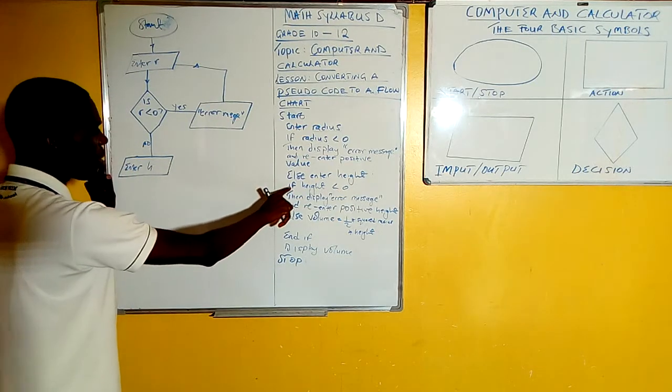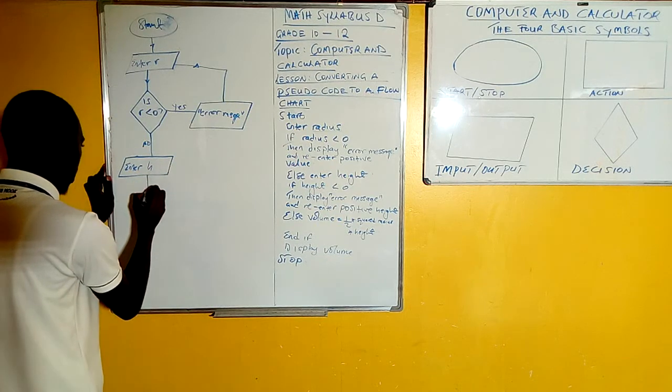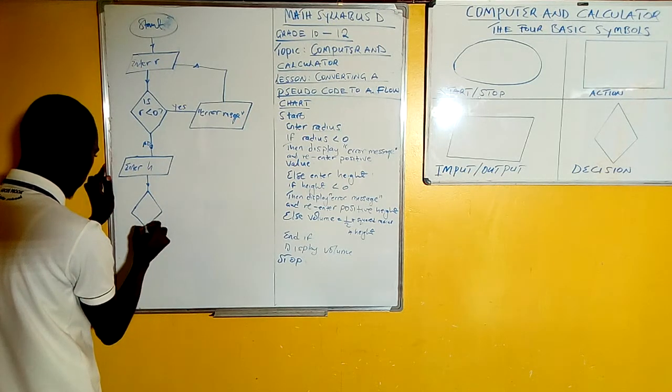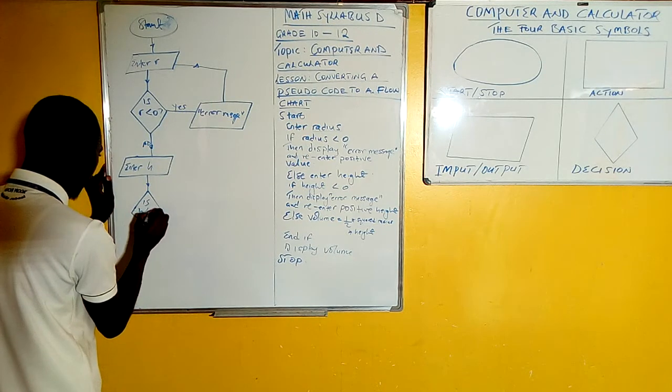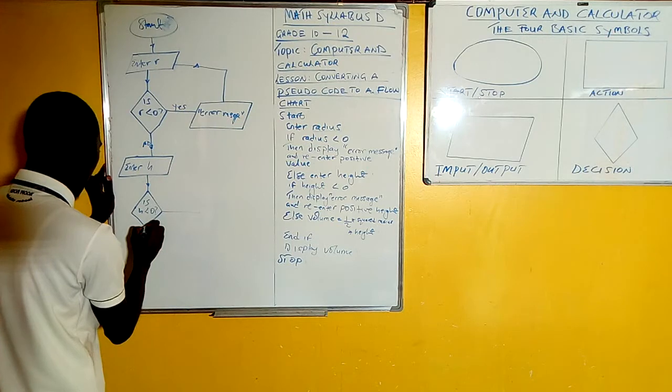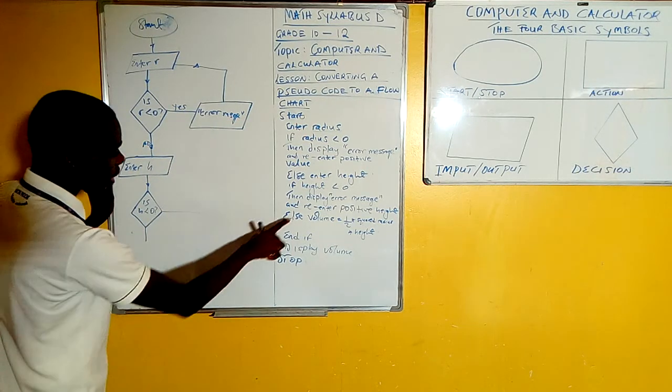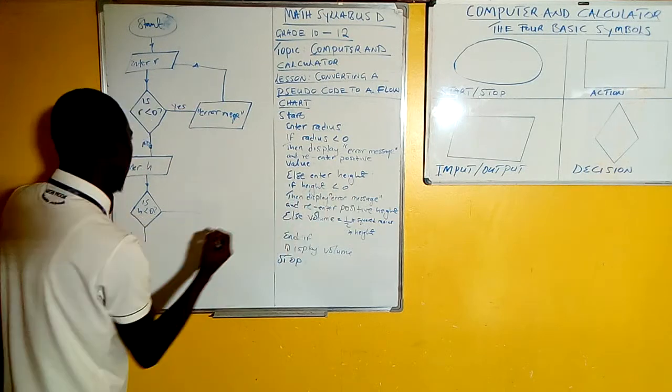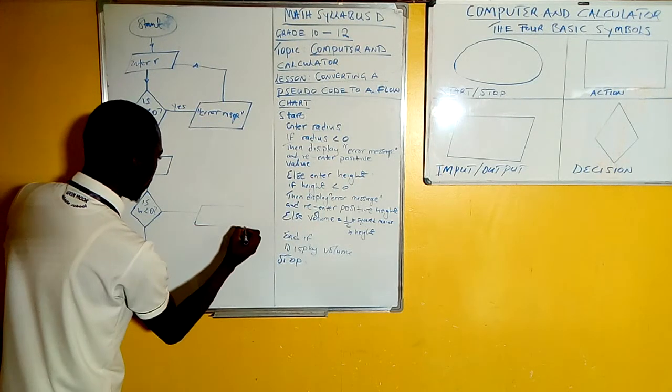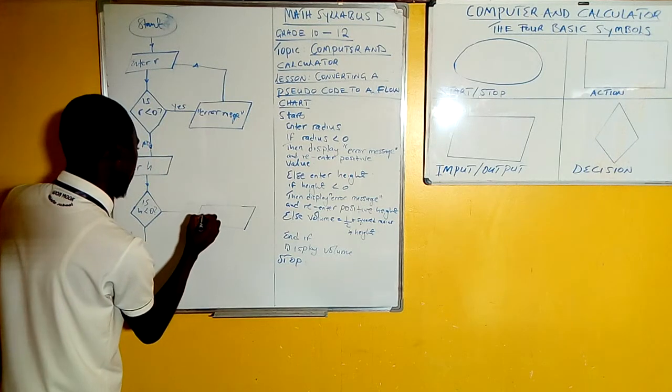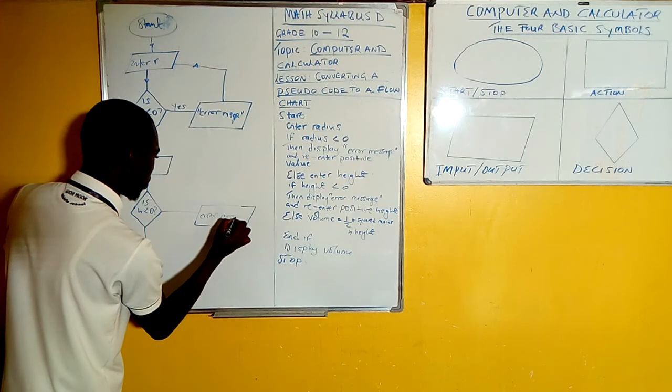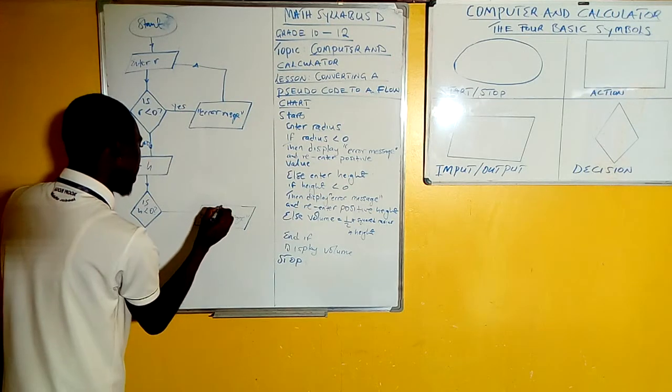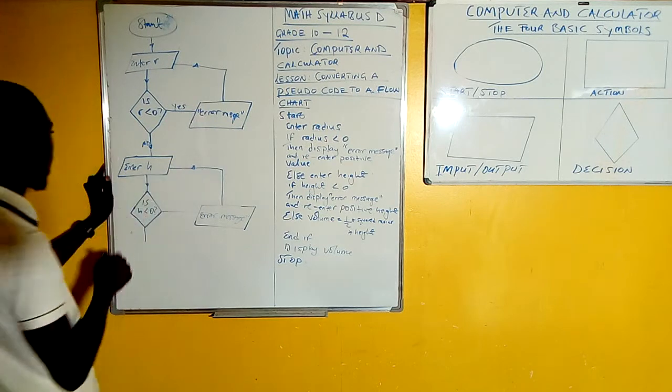So you enter the height, as they are saying. Then again there's an if. The moment you see if, then you know you have to make a decision. The only place where you can make a decision from is in the decision box, which is the diamond shape. So you ask yourself, is the height less than zero? This is a question, so of course there should be a yes and a no. So now here it's a yes. If height is less than zero, then display error message and re-enter positive height. So also here we are displaying the error message. So display error message. You put it as it appears there. And re-enter positive height. So you have to go back and re-enter the correct height here.